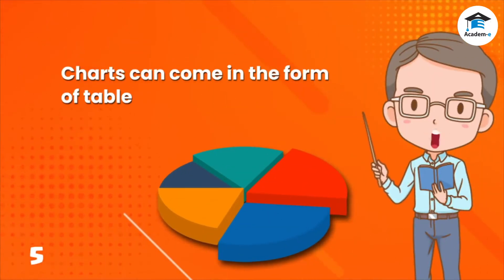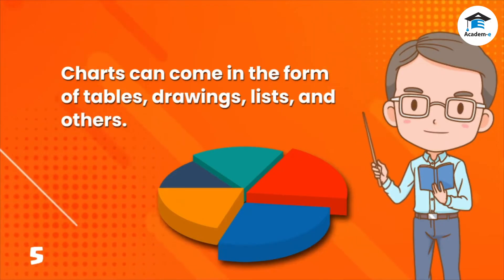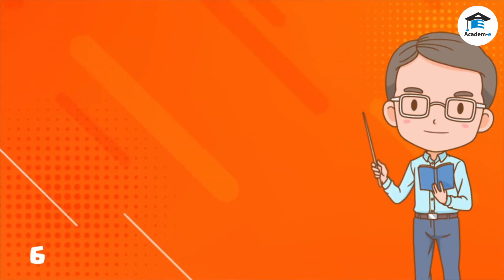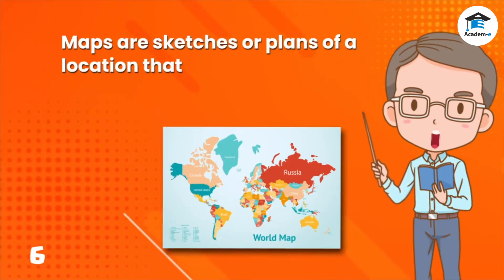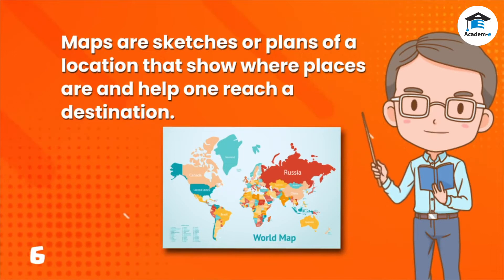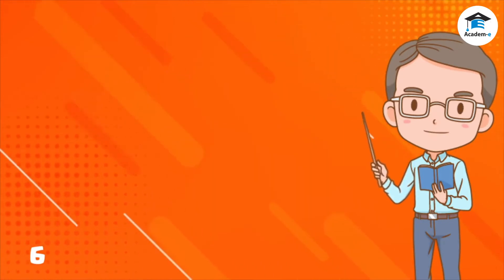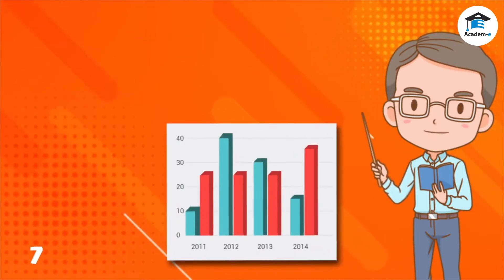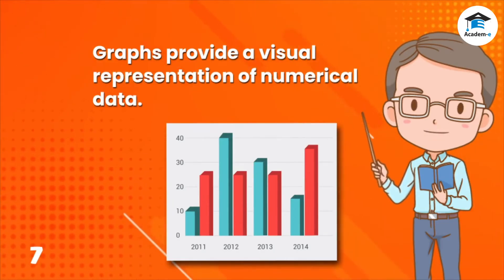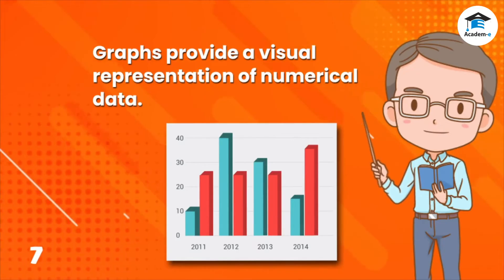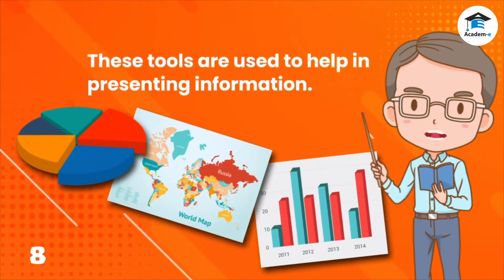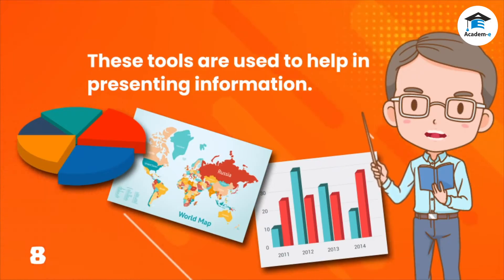Charts can come in the form of tables, drawings, lists, and others. Maps or sketches are plans of a location that show where places are and help one reach a destination. Graphs provide a visual representation of numerical data. These tools are used to help in presenting information.